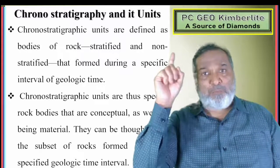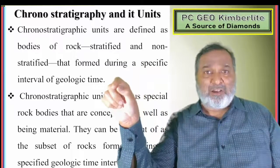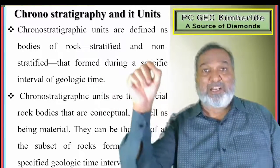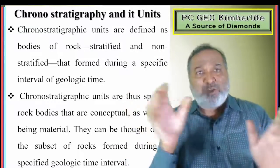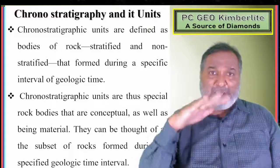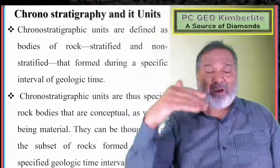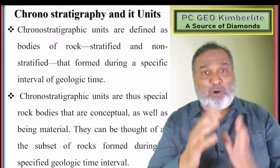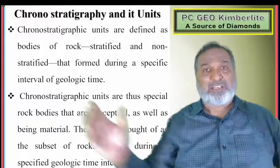Those rocks formed at a particular level — for example, those formed in the Paleozoic, particularly in the Cambrian, Ordovician, Silurian, Devonian — must be ordered properly. The older will be at greater depth; as you come to the top, you get the younger rock. That is the order of superposition — vertical succession or horizontal succession.